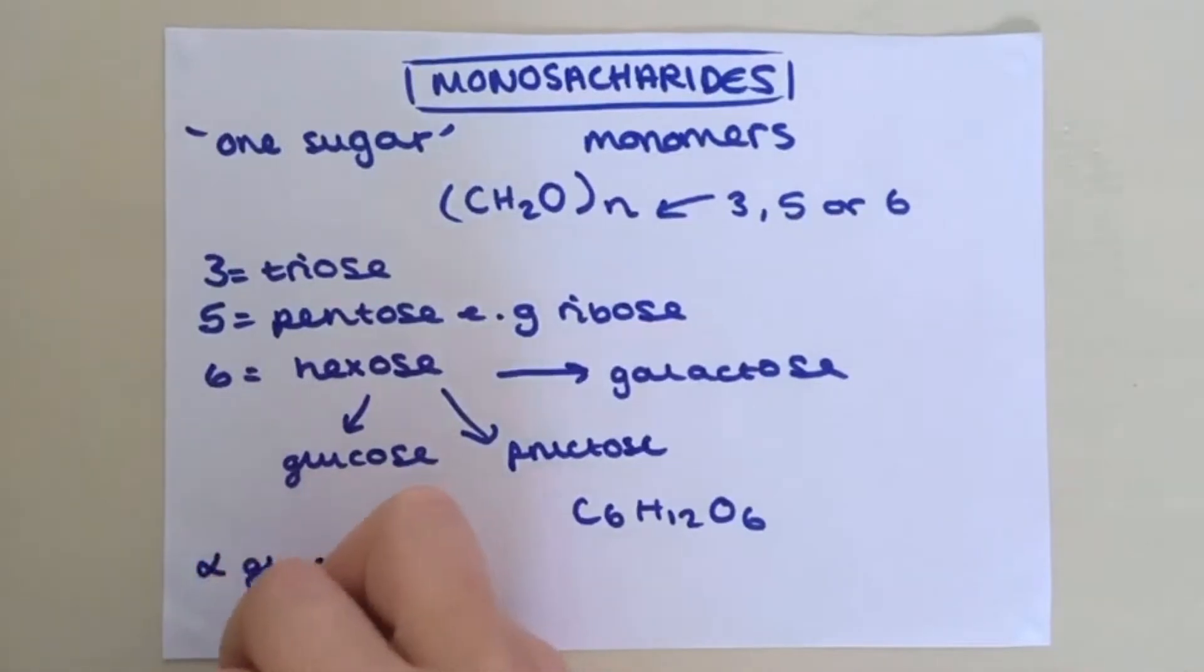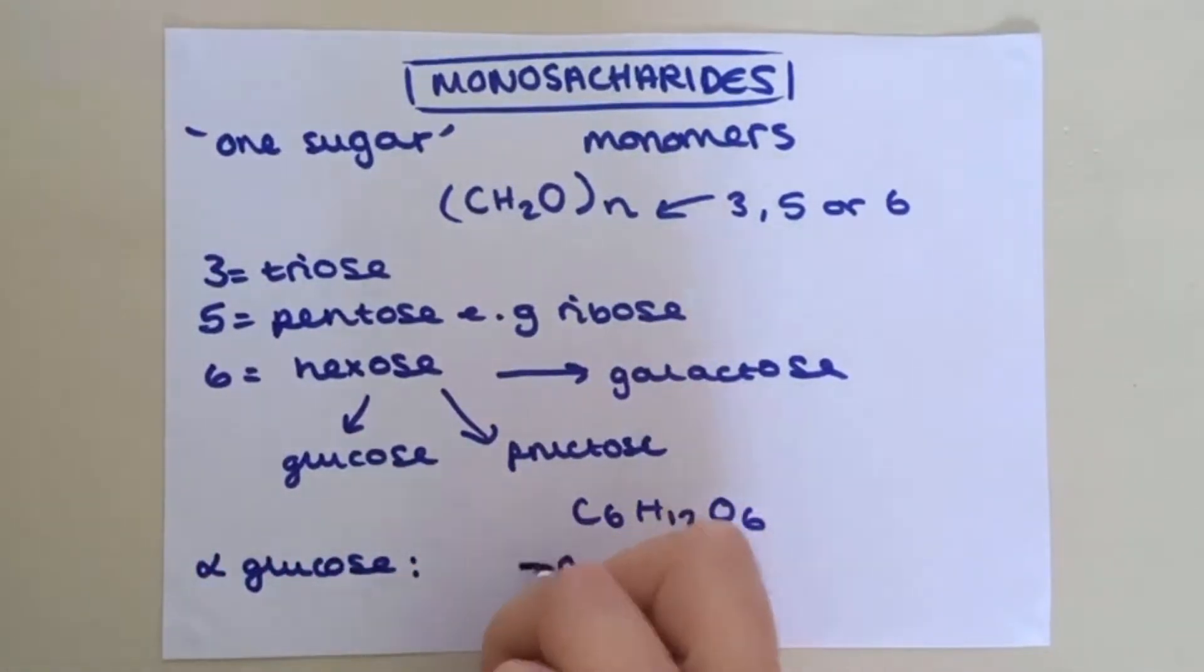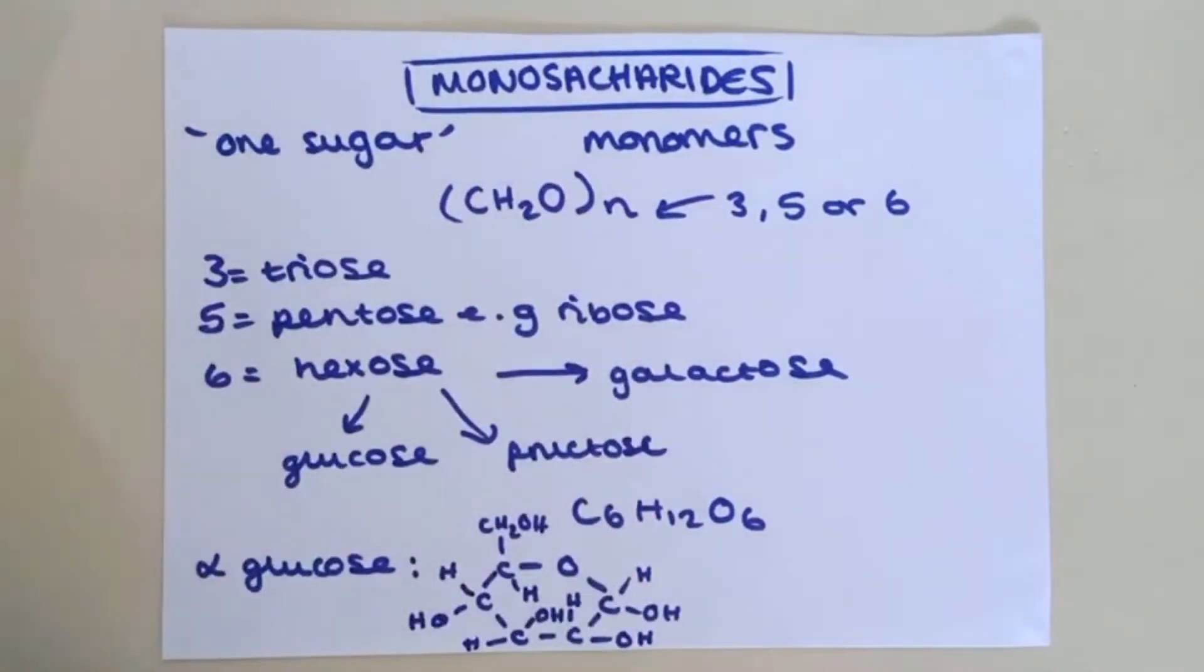First, I will draw alpha-glucose. It is basically a hexagon consisting of oxygen in the top right corner and five carbon atoms. The sixth carbon atom is attached to carbon number 5 along with H2OH and another H. Then you add HOH, HOH, OHH and HOH to carbons number 1, 2, 3 and 4.